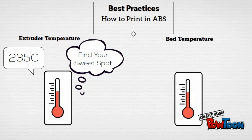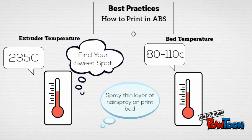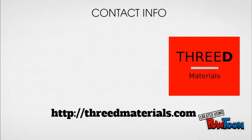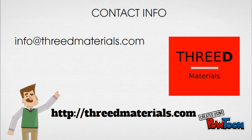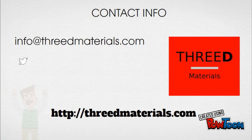The bed temperature should be heated somewhere between 80 and 110 degrees Celsius, and if you have any hairspray laying around, spray a thin layer before printing begins, as this will help keep your initial layers from warping during the printing process.